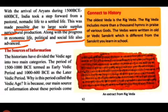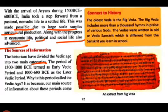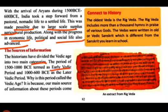Historians have divided the Vedic Age into two main categories. Itihaaskaron ne Vedic Yug ko do mukhya categories mein vargikrit kiya hai: the period of 1500 to 1000 BC termed as Early Vedic Period, and 1000 to 600 BC as the Latter Vedic Period. Yani ki 1500 se lekar 1000 isa purv tak - Early Vedic Period, purv Vaidik Kaal; aur 1000 se 600 isa purv tak - Uttar Vaidik Kaal.